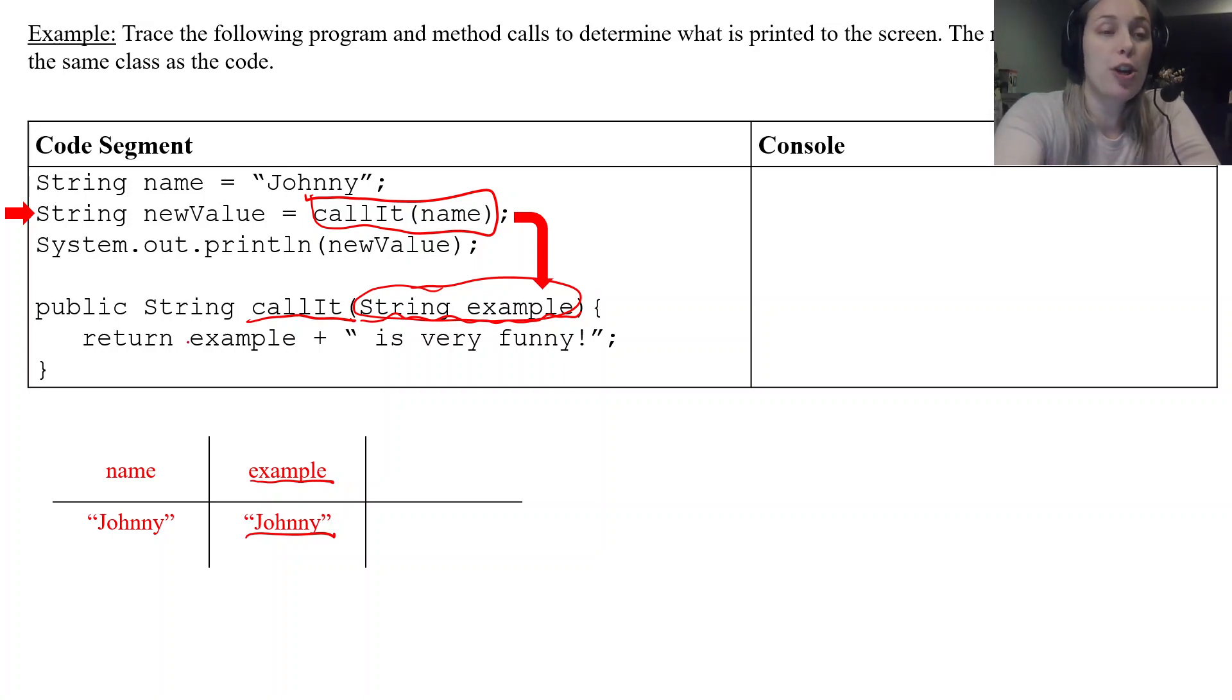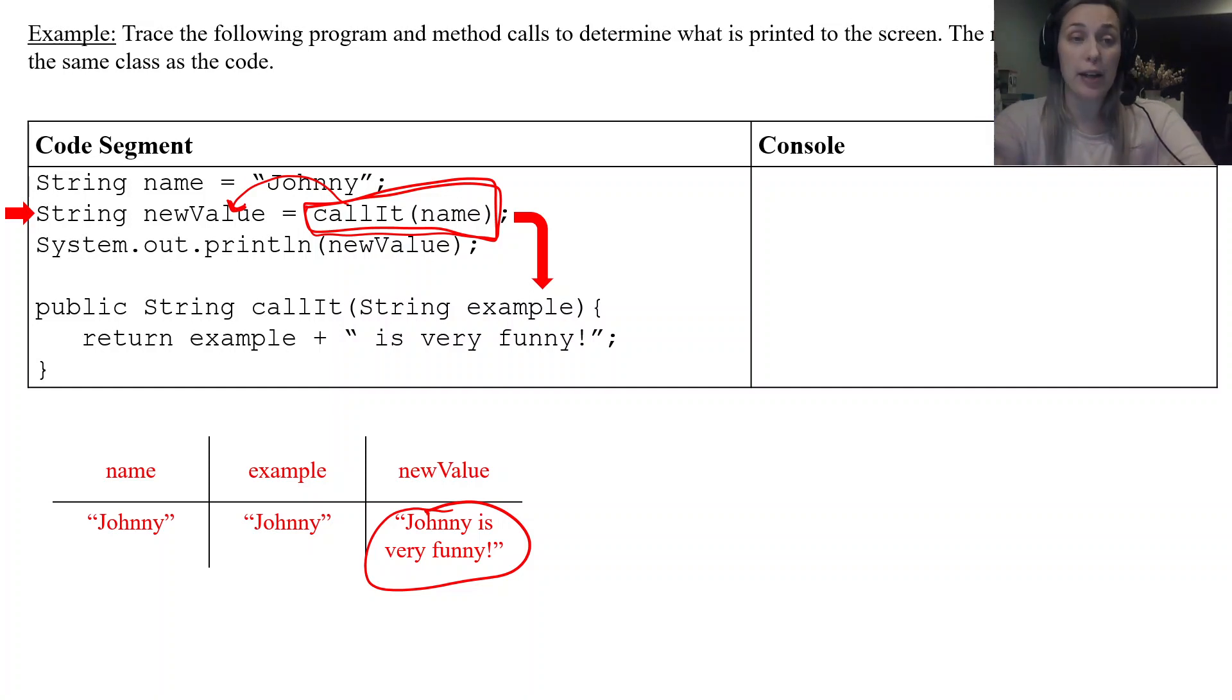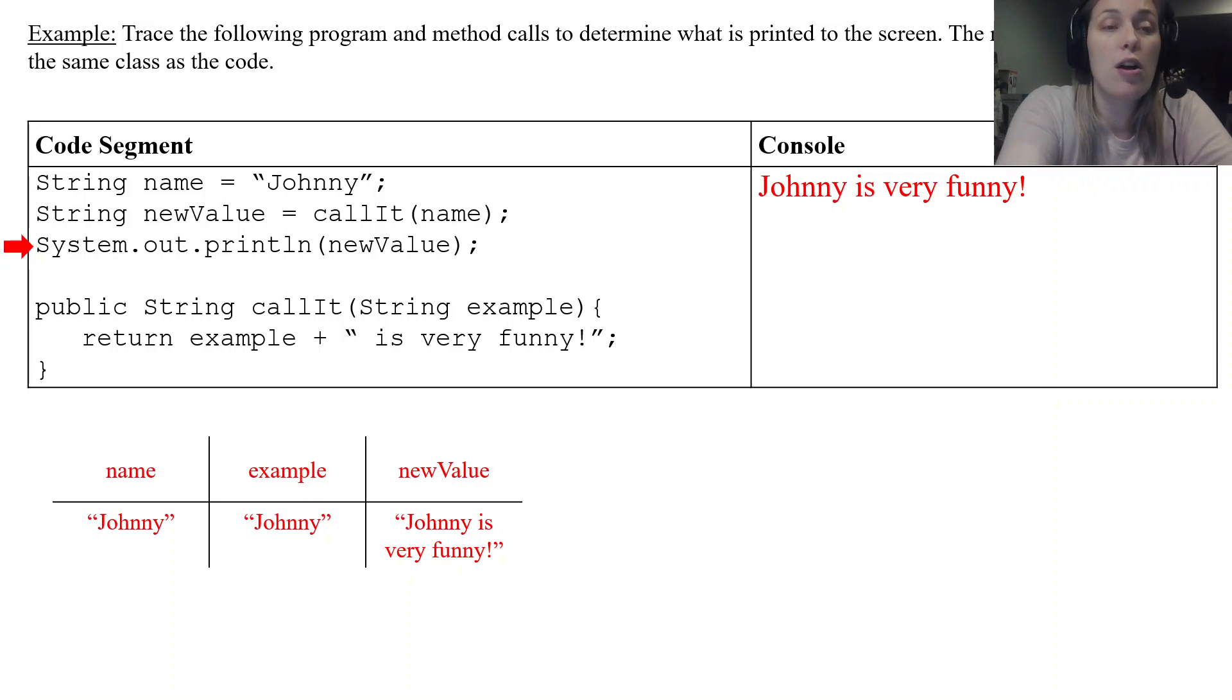So then I have a return statement. Okay and my return statement is an expression. Okay it's a single return statement. It says example plus and then in parentheses is very funny. Okay so that plus because it's between two strings remember that's concatenation. So it's going to return Johnny is very funny. Okay so it's going to return Johnny is very funny. That's what this method will do. Now if it returns that it needs something to capture it and that's why we have string new value. Johnny is very funny is a sentence that's going to get stored in new value. So when you go to print new value you're going to print Johnny is very funny.